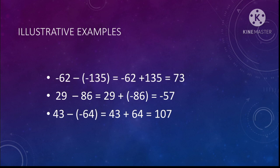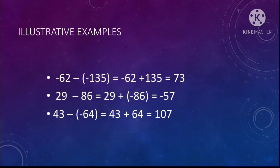Next is 29 minus 86. This is similar to 29 plus negative 86. Since negative 86 is greater in absolute value than 29, the sign of 86 is copied in the difference, so we have negative 57 as the difference of 29 minus 86.